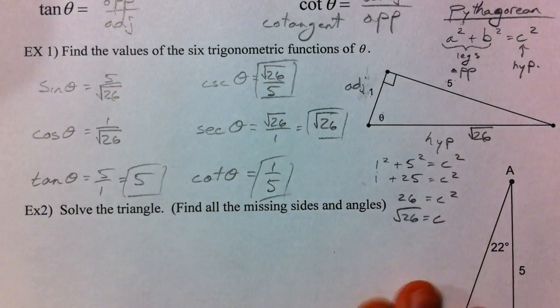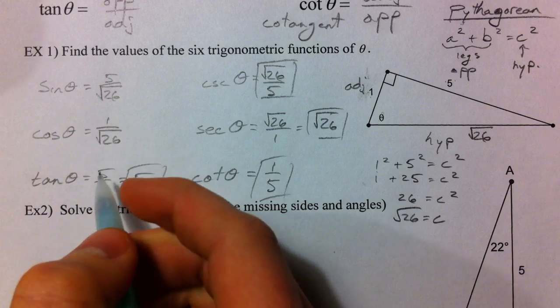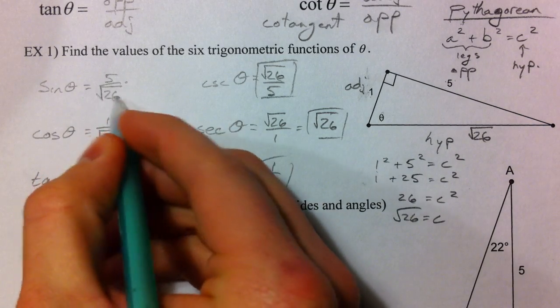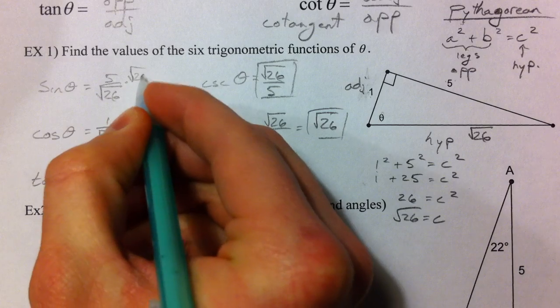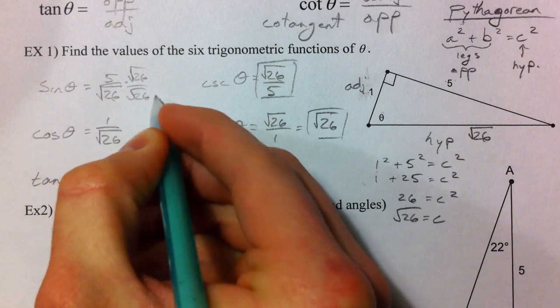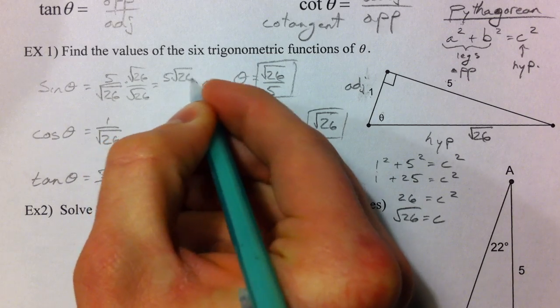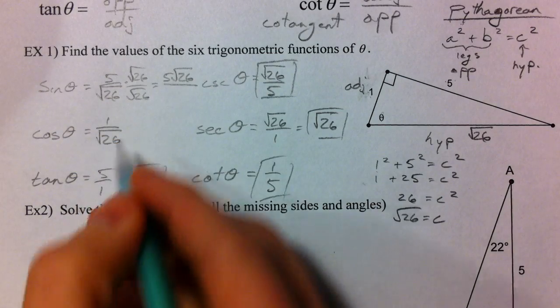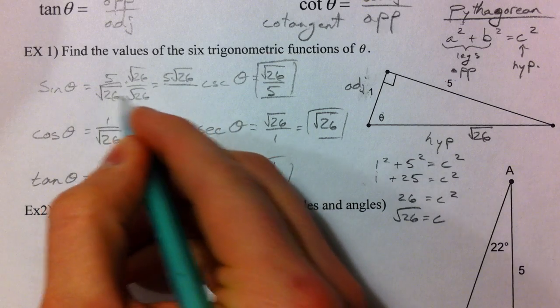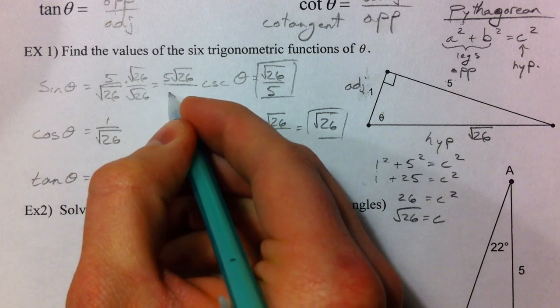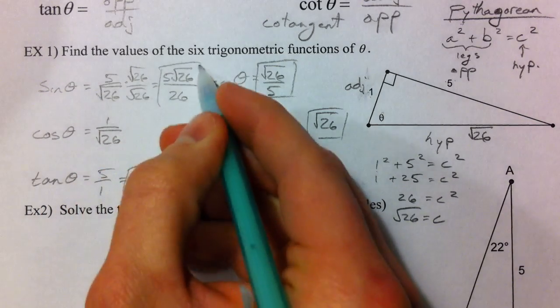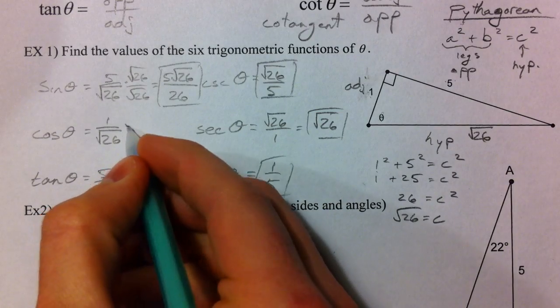These over here require rationalizing. So, we're going to do that. We're going to multiply to cancel out the root 26 by root 26 over root 26. And we're going to get 5 root 26 over 26 times 26. It's 26 squared, so it's going to cancel out the root. And we're going to get that.